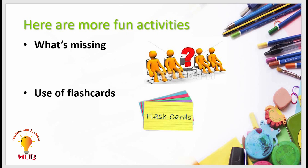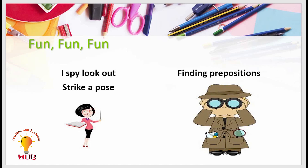The fifth activity for teaching prepositions is 'I Spy Look Out.' The teacher shows different objects, flashcards, and pictures to students. These objects are then hidden in the classroom and students go and look for them. When done, students let the class know where the object was found using prepositions. For example, the pouch was on the right side of the door; the cap was behind the chair. Students continue this game to practice prepositions.